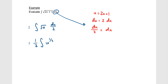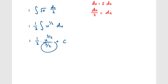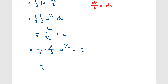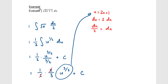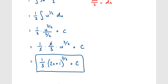Rewriting in terms of u: the square root of 2x + 1 becomes the square root of u, and dx becomes du/2. Bringing the 1/2 out front and rewriting as u to the 1/2, we add 1 to the exponent and divide by 3/2, plus c. Converting division by 3/2 to multiplication by 2/3, the 2's cancel giving 1/3. Replacing u with 2x + 1: the answer is 1/3 times (2x + 1) to the 3/2 plus c.